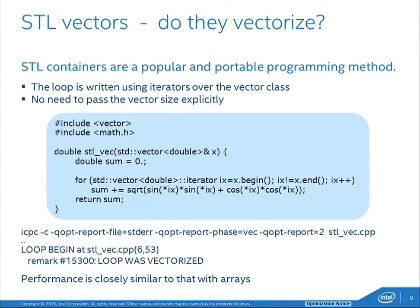This is a little example. The loop is written using iterators over the vector class. Using the vector class has a lot of advantages — it provides additional functionality you don't get with simple arrays. There's no need to pass a size explicitly; it's contained within the class. The for loop line looks a little ugly, but you compile the same way as before. Enable the optimization report, and you see the loop was vectorized.